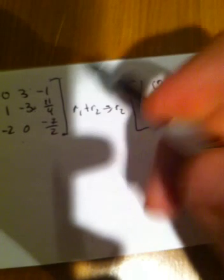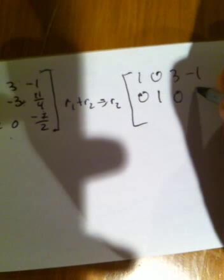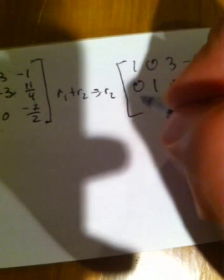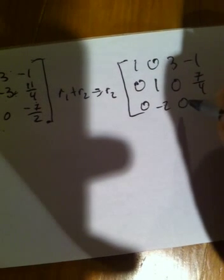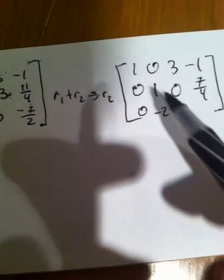And then 11 over 4 minus 1, well that's 11 over 4 minus 4 over 4, so 11 minus 4 is 7, so that's 7 over 4. And then 0, negative 2, 0. Now what I'm going to do is two of these rows.